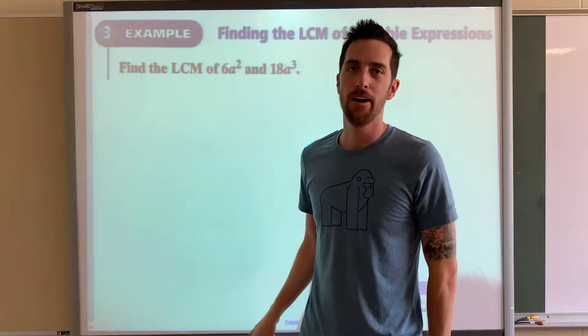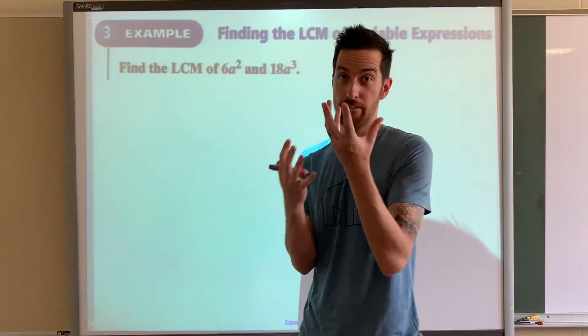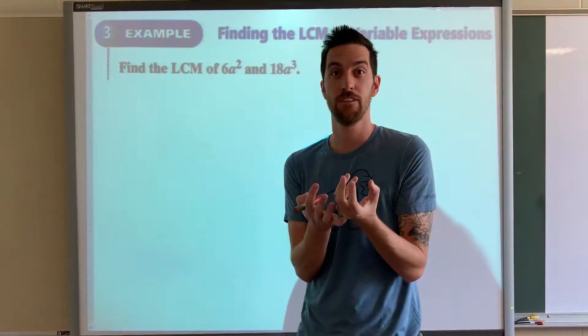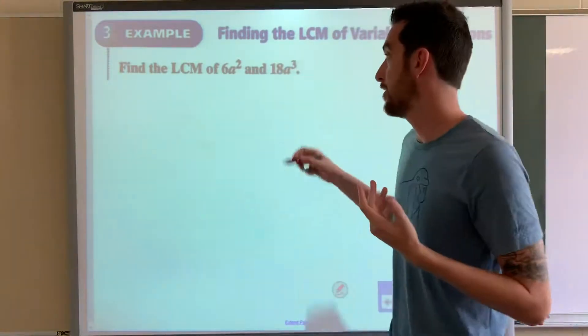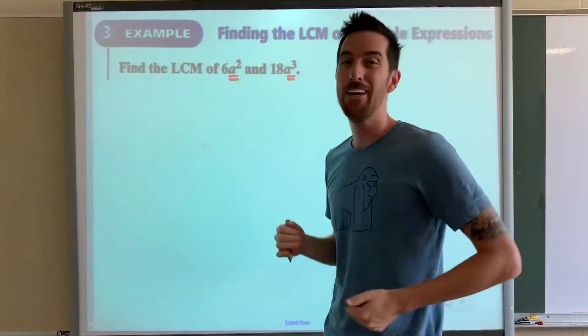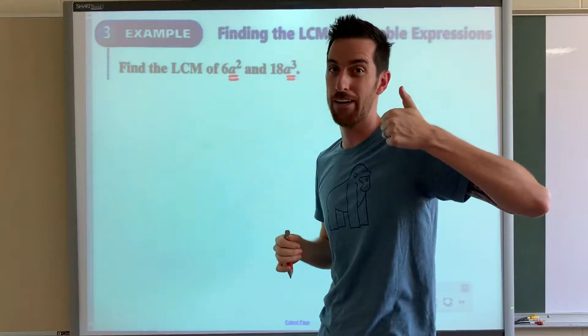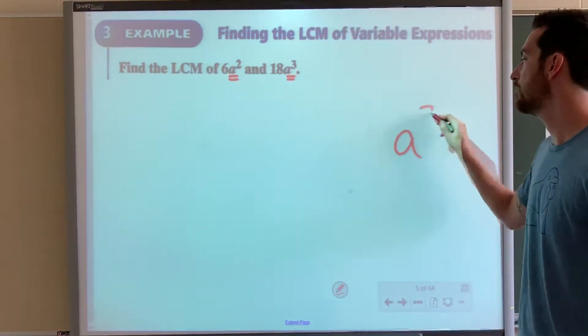Here's the thing you've got to remember. Before, we were looking for the greatest common factor, which is what do they both have in common? Now that we're looking for the least common multiple, you've got to go the top dog on everything. So this one has a to the second power, this one has a to the third. You've got to go with the higher one on all the variables. So it'll be something a to the third.